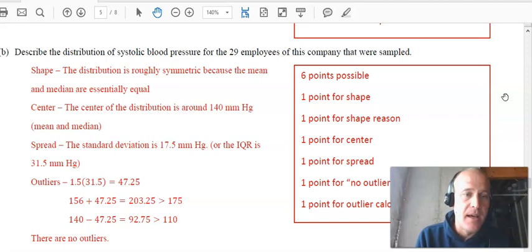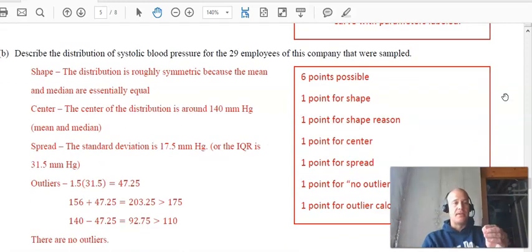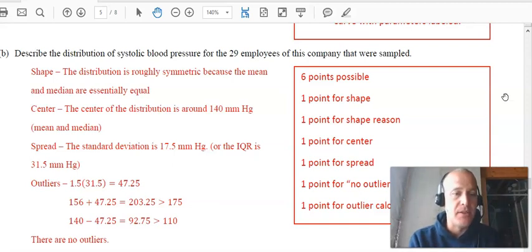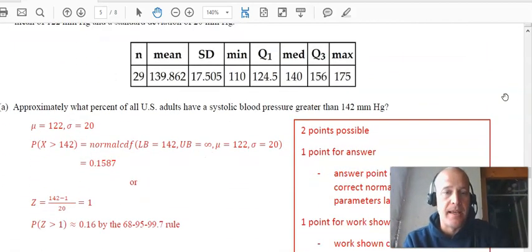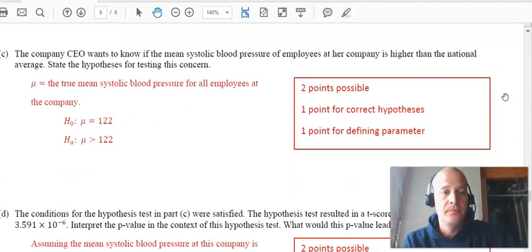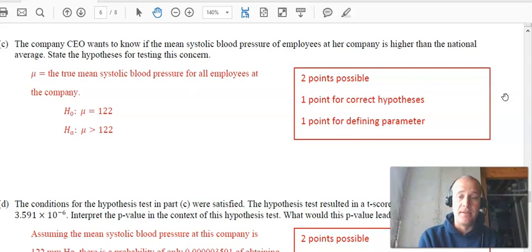This is another distribution to describe. This is not a sampling distribution. This is the distribution of the summary statistics. Once again, there's SOCS here, right? You have the shape, center, and spread. Notice that they're referencing the spread with standard deviation and they're referencing the center with the mean. Okay. So this company CEO wants to know if the mean systolic blood pressure at our company is higher than national average. So this is starting our test of significance. We're going to let mu be the true mean systolic blood pressure for all employees at the company. And the detail here is important. If you just said the true mean systolic blood pressure, you'd probably get dinged because you need to reference the population as the employees of the company.